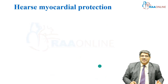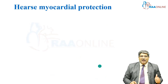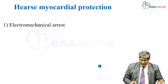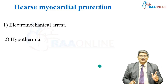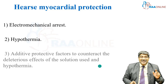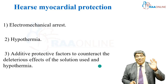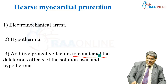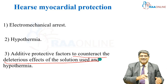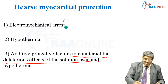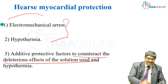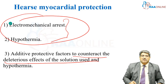There are three important strategies for myocardial protection. First, you have to produce an electromechanical arrest. Second, you have to induce hypothermia as a component of myocardial protection. Third, you have to include many protective factors to counter the deleterious effects of the solution used to cause arrest and hypothermia — both during and after arrest.